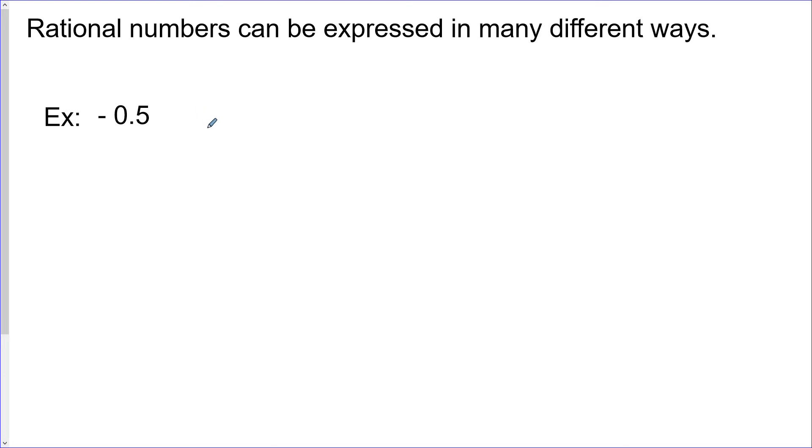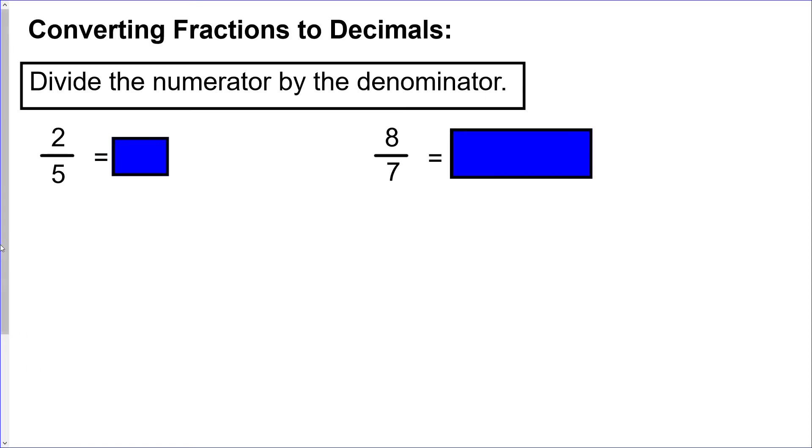Rational numbers can be expressed in many different ways. Negative 0.5 could be written as negative 1 over 2, it could be written as negative 2 over 4, it could be written as 2 over negative 4. I think you kind of see where I'm going with this. There's many different ways to express them. Really anytime you get a fraction, you can always find potentially an infinite number of equivalent ones.